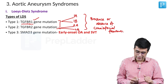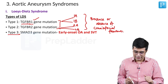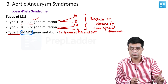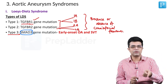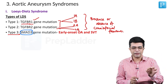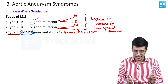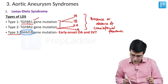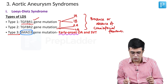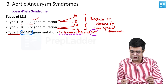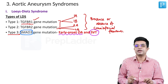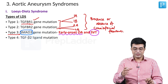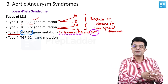Type 3 LDS involves SMAD3 gene mutation. SMAD3 is involved in the intracellular signal pathway within the cell. If this gene is mutated, it produces Loeys-Dietz syndrome plus additional findings including early onset osteoarthritis and supraventricular arrhythmia, especially supraventricular tachycardia.